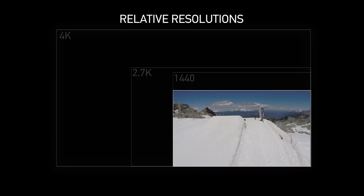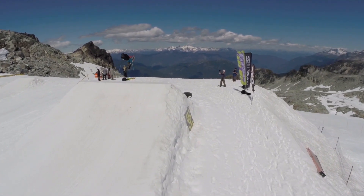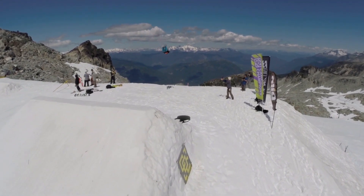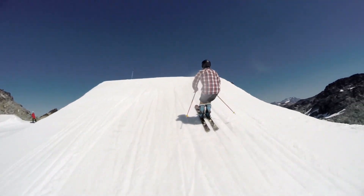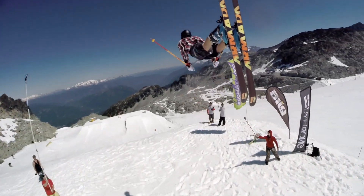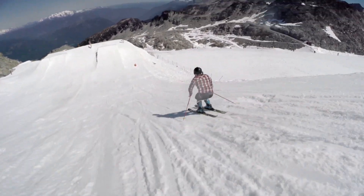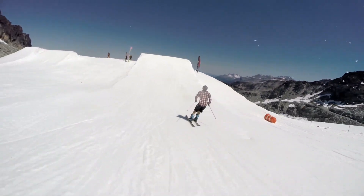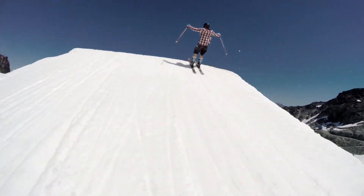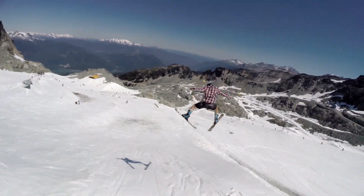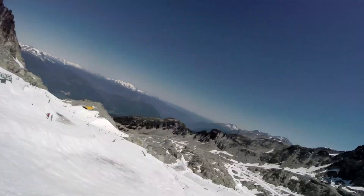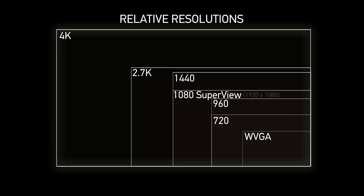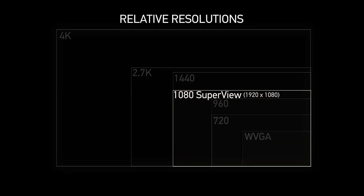Next on the list is 1080p, and this is one of the most versatile modes in the camera. It's full HD and you can film it at 60 frames per second all the way down to 24, so you can get that fluid slow motion if you need it. At GoPro we use 1080p for anything where we know we need slow motion — follow cam skiing, mounted shots, handheld b-roll, car mounted shots. It's pretty much the best all-around mode, so if you're not sure which mode to use, go for 1080 60.